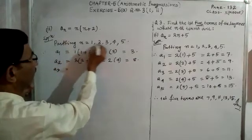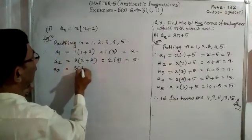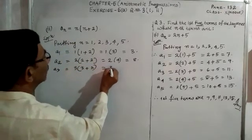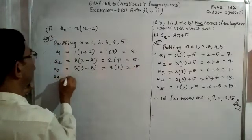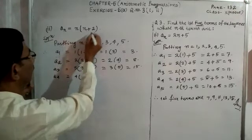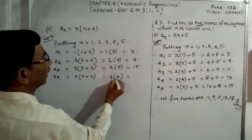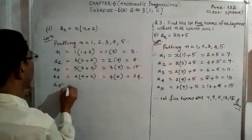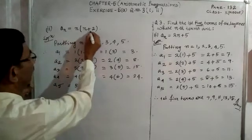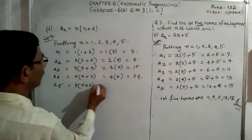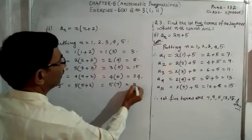When n is equal to 3, a₃ = 3(3 + 2). 3 + 2 is 5, multiply: 3 into 5 is 15. And when n is equal to 4, a₄ = 4(4 + 2). 4 + 2 is 6, multiply: 4 into 6 is 24. And when n is equal to 5, a₅ = 5(5 + 2). 5 + 2 is 7, multiply: 5 into 7 is 35.